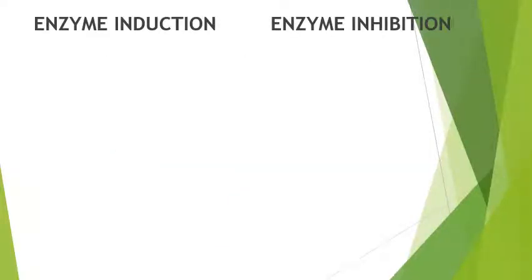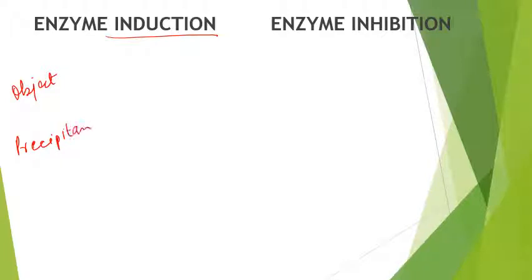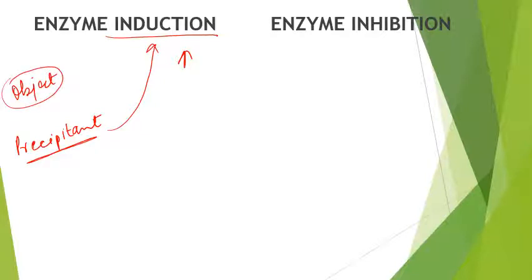Now let us talk about enzyme induction and enzyme inhibition. First, induction. There are two types of drugs: the object drug and the precipitant. The precipitant drug causes enzyme induction — induction means increasing the level of the enzyme in the body. If the enzyme which causes metabolism of the object drug is increased, it will lead to early excretion of the drug from the body, and therefore the desired pharmacological action will not be achieved.